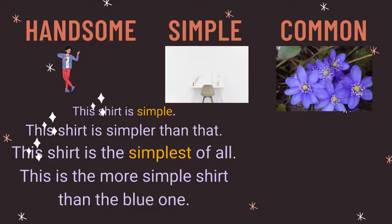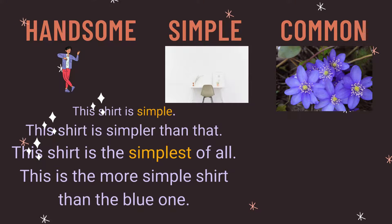More Rule 7 examples: handsome, simple, and common. All these words can take both forms — for example, simple, simpler, simplest, or more simple, most simple. For instance: 'This shirt is simple. This shirt is simpler than that. This shirt is the simplest of all.'